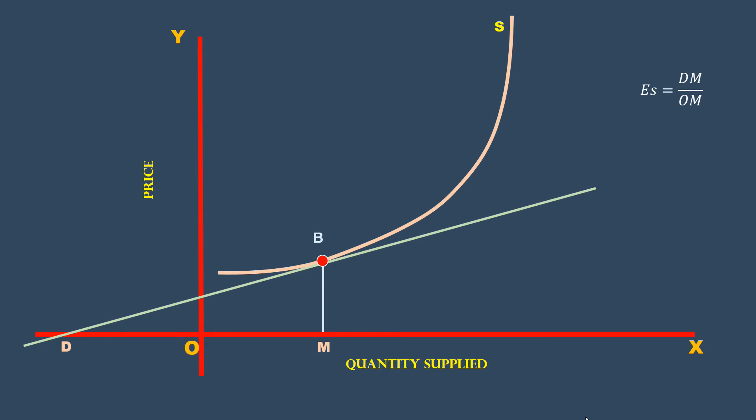If a tangent drawn to a point on the supply curve is parallel to the x-axis, the supply is said to be perfectly elastic. This is what happens at point A.